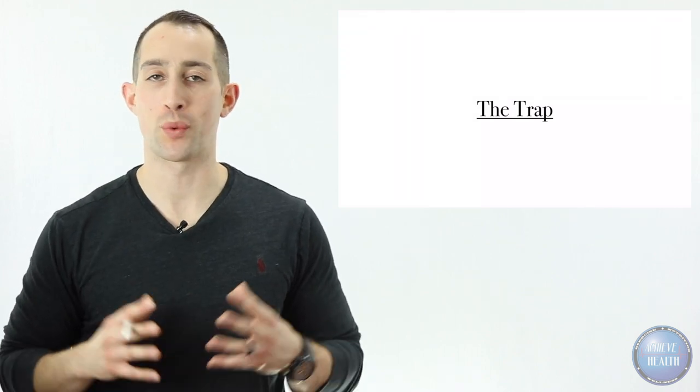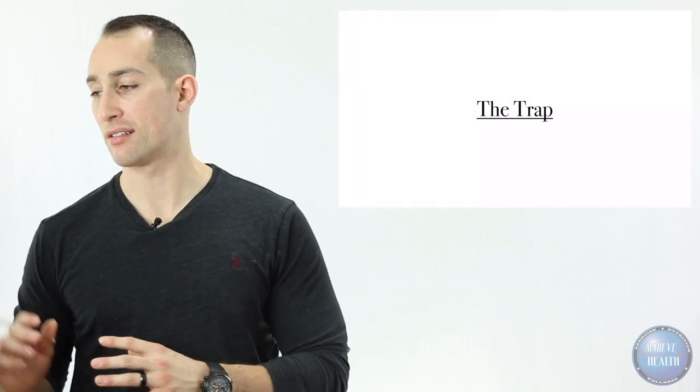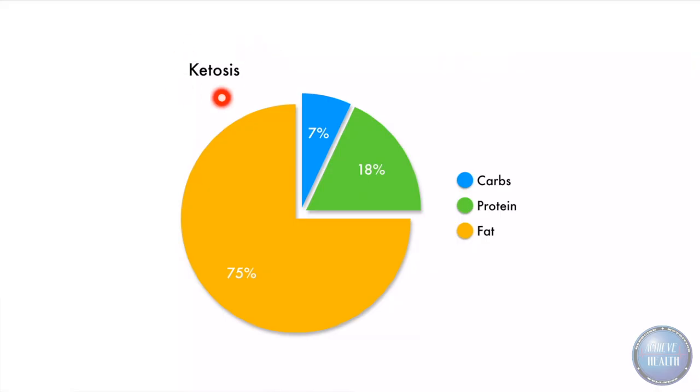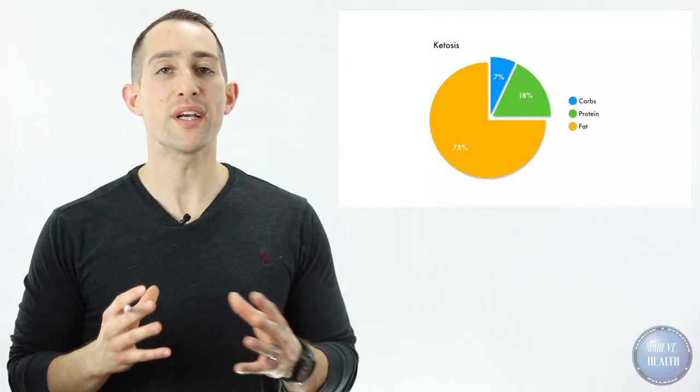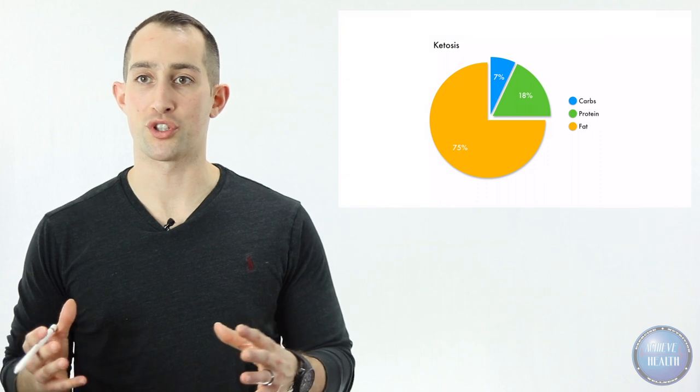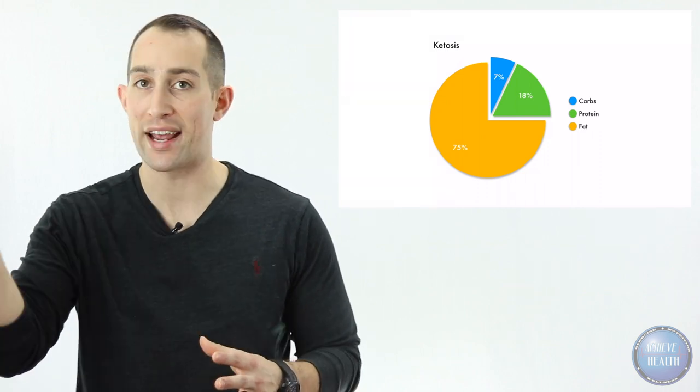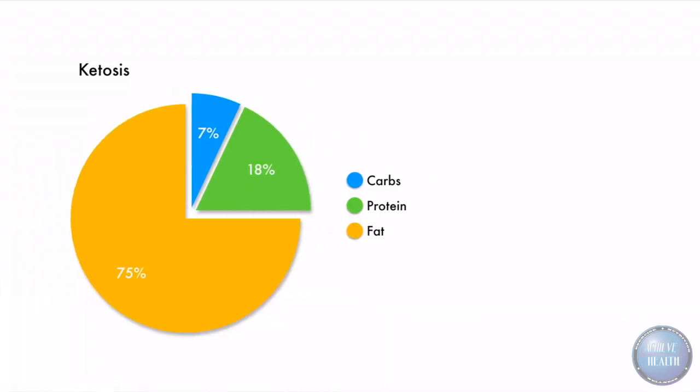Now let's talk about the trap. The trap is very common for people to fall into. This is just a classic case of not being deliberate enough, not planning enough, and not knowing what your percent breakdown is. We have ketosis and we have our specific macronutrient breakdowns. This is an average, it's going to change depending on the individual, but let's just say you're eating 75 percent fat, 18 percent protein, and 7 percent carbohydrates.